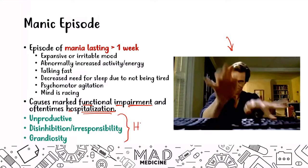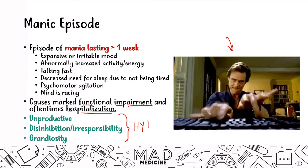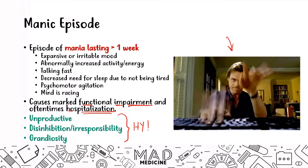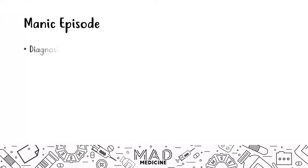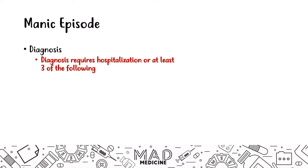These features — disinhibition, irresponsibility, and grandiosity — are very important and you should definitely understand them for a manic episode. When it comes to diagnosis, it requires either hospitalization or three of the following symptoms. You need to either hospitalize someone for mania or have three of: distractibility, impulsivity, grandiosity, flight of ideas, agitation, sleep deprivation, and talking really fast.